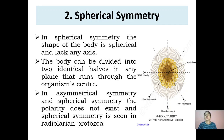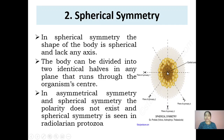In spherical symmetry, the shape of the body is spherical and it basically lacks any axis. The body can be divided into two equal halves in any plane that runs through the organism's center — the plane must compulsorily pass through the center to yield two equal halves. In both asymmetrical and spherical symmetry there is no polarity. The best example is radiolarian protozoa.